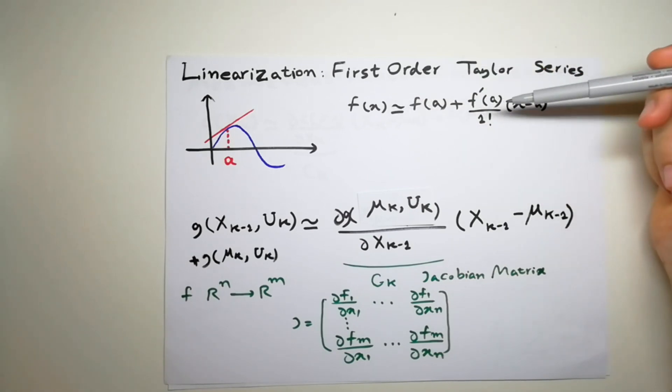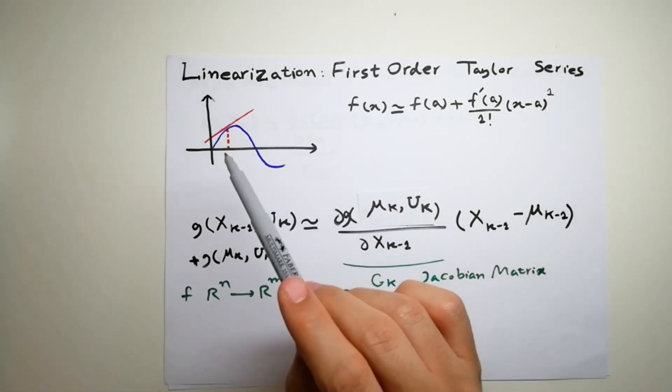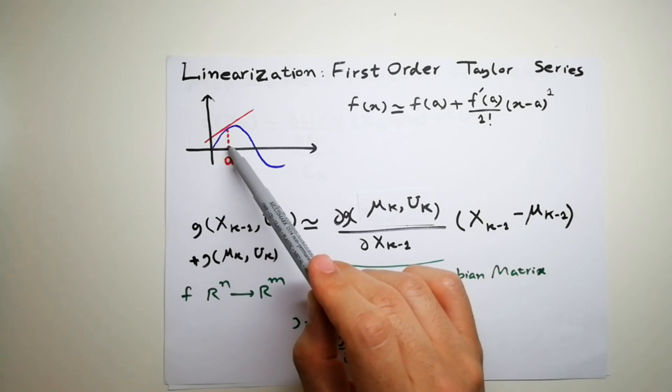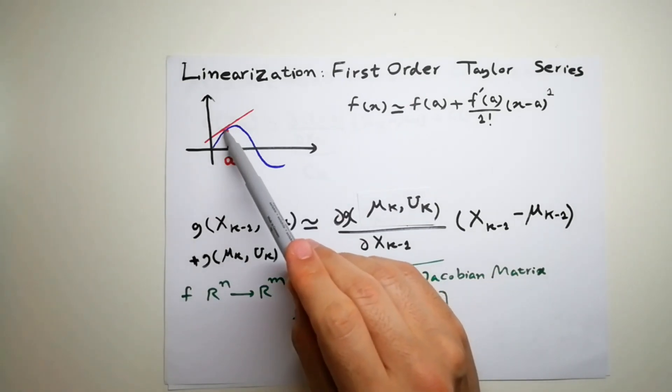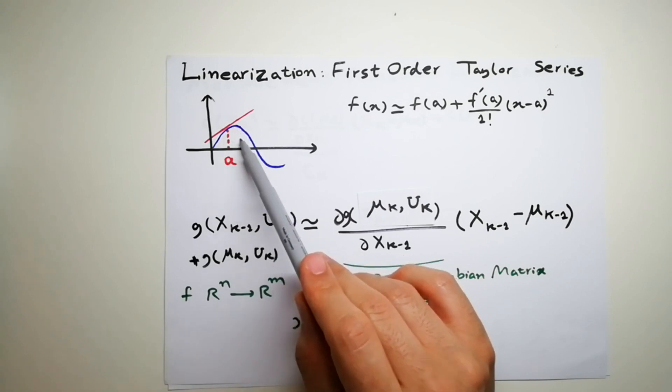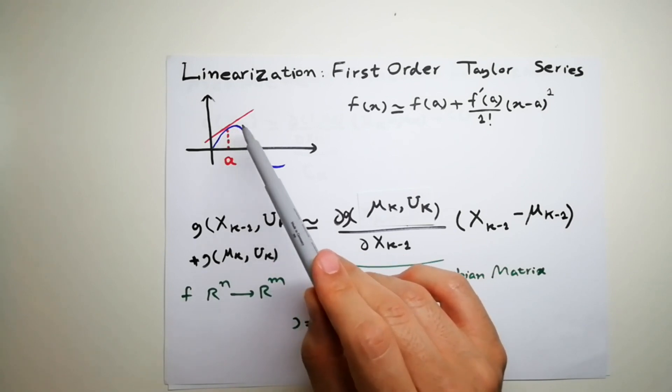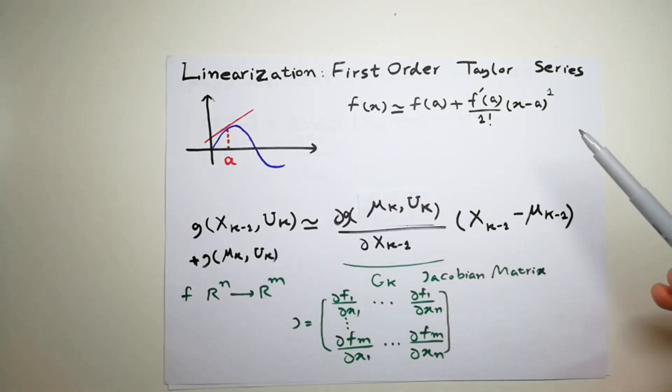We approximate the function there. So let's say we have a sinusoidal form like this, and we linearize it around the point A, and you can see for all these points in this vicinity, it's a very good approximation. But if we get far away, it's wrong, but in this vicinity, it's good. So, you have to linearize it on every point that you are on that particular moment, and then you have to linearize it again.